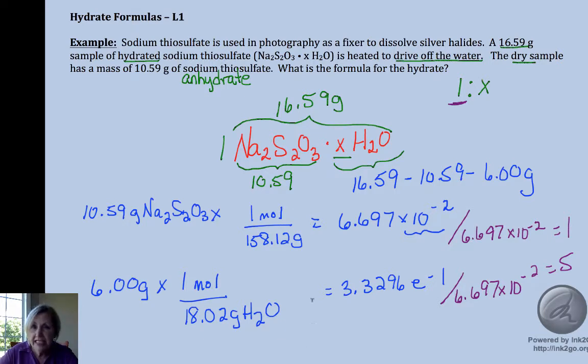So what that means is instead of this x here, we have now discovered that there are five waters. So the name of this would be sodium thiosulfate pentahydrate.